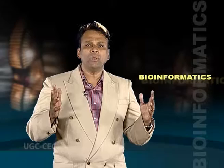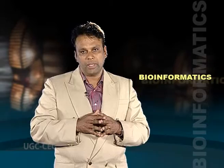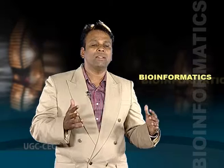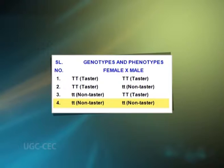Let us see how the frequency of a gene is constantly maintained generation after generation. Assume a large human population where homozygous tasters and homozygous non-tasters occur in equal numbers. The marriages are at random since people are unaware of their reaction to phenyl thiocarbamide. Four types of marriages are common: one, taster and taster; two, taster and non-taster; three, non-taster and taster; and four, non-taster and non-taster.